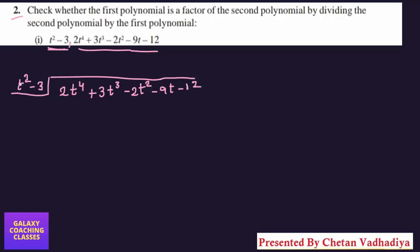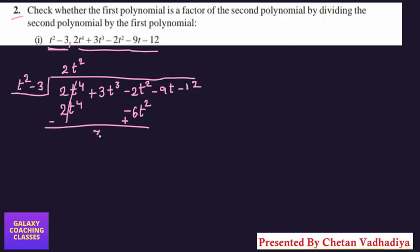For question 2(i), the first polynomial is t²–3 and the second is 2t⁴+3t³–2t²–9t–12. We start: t² into t² gives t⁴, and with the coefficient 2 we get 2t⁴. Multiplying t² by –3 gives –6t². These are like terms, so we align them, then change signs — this cancels, giving us 3t³ plus 4t²–9t–12 as the remainder.